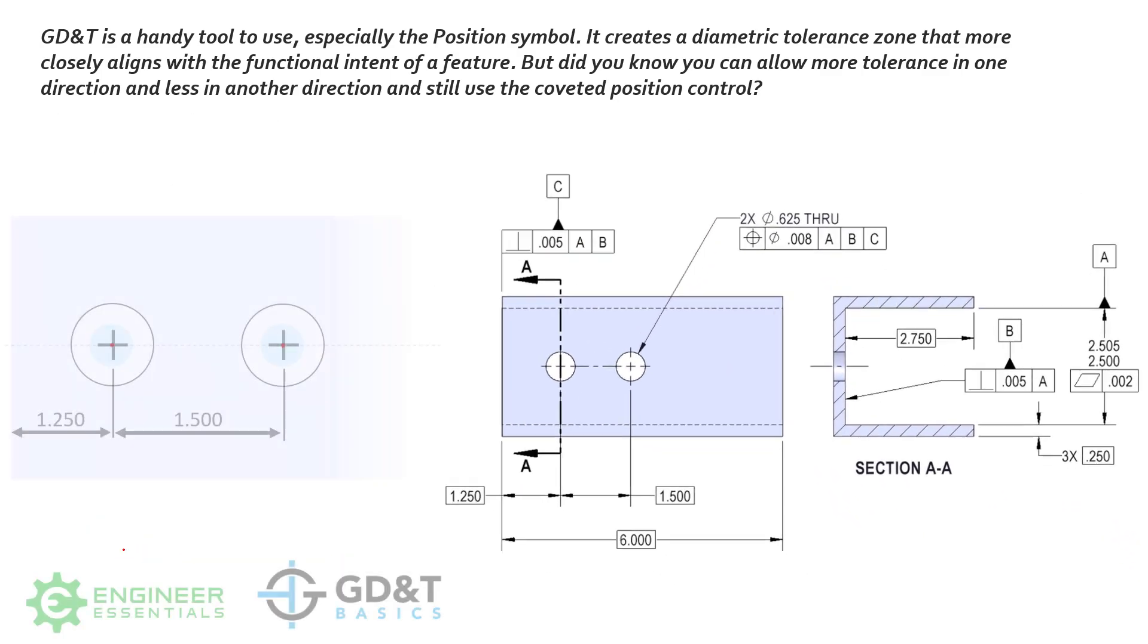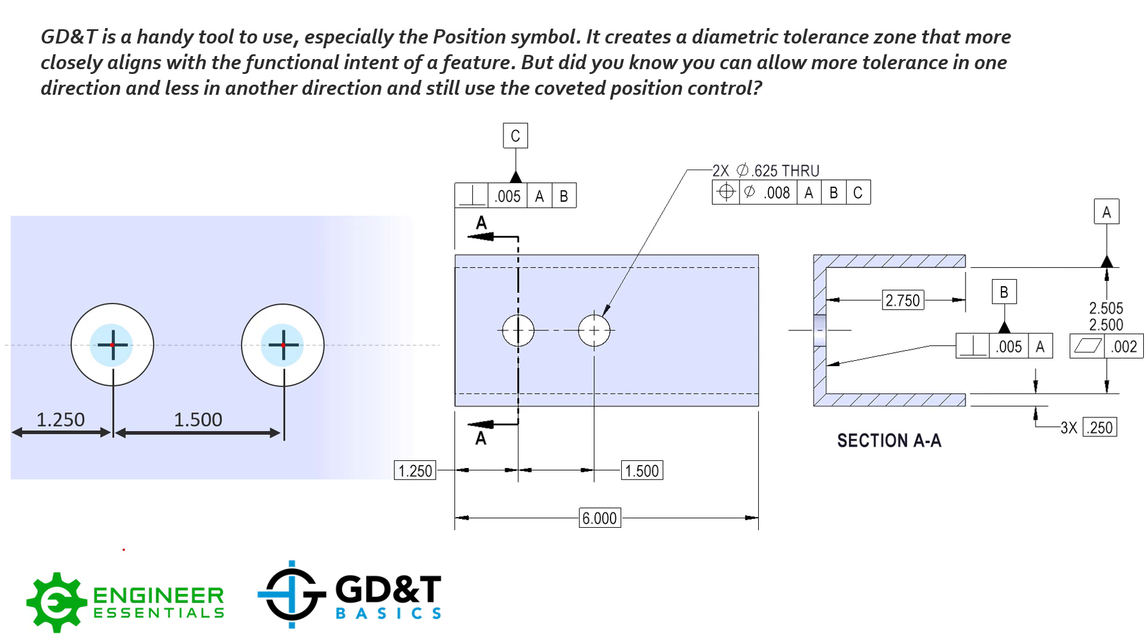Now we'll look at the tolerance zones associated with this feature control frame just to understand it a bit more. You'll see here the tolerance zones are centered at true position, or in other words, 1.25 away from the left surface or datum feature C, as well as 2.75 away from datum feature C for the right hole. Again, with basic dimensions, there's no tolerances on them, so you can dimension them any way you want. There's no stack up, there's no tolerances, so there can't be a stack up.